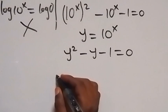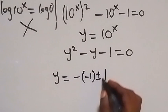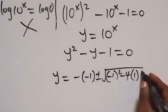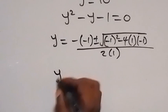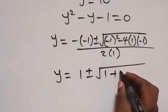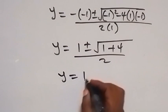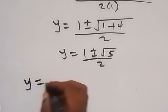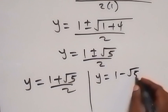This will become y squared minus y minus 1 equals to zero. Then we can solve this quadratic equation using the formula method. We have y equals to minus b — b is minus 1, so that's minus minus 1 — plus or minus square root of b squared, which is 1 squared, minus 4, a is 1, c is minus 1, all over 2a which is 2 times 1. Solving this gives y equals to 1 plus or minus square root of 1 plus 4 over 2, so y equals to 1 plus or minus square root of 5 over 2. We have two possible values: y equals to 1 plus root 5 over 2, and y equals to 1 minus root 5 over 2.